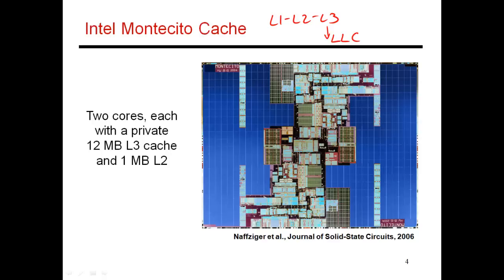These LLCs tend to be really large. Here's an example from a slightly older chip where all of the blue regions constitute the L3 caches — two 12-megabyte L3 caches — and as you can see, it takes up more than half the entire chip area. Because of their really large size, there are a couple of peculiarities for these L3 caches that don't show up when you design the L1 and L2 caches. I'm going to cover at least two of these very important design issues: one is referred to as non-uniform cache access, and the second has to do with whether you implement these large caches as private or shared structures.